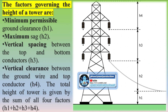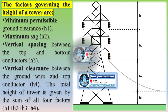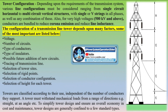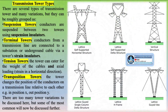Medium transmission line: A medium transmission line is classified as a transmission line with a length more than 80 kilometers or 50 miles but less than 250 kilometers or 150 miles. The operational voltage level is from 69 kV to approximately 133 kV. Capacitance effect is present, and distributed capacitance form is used for calculation.